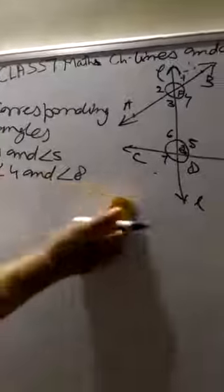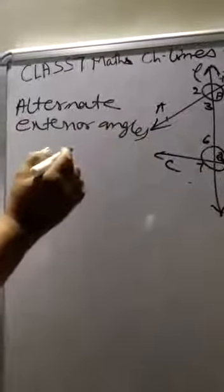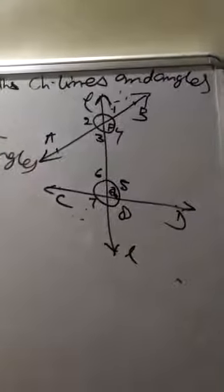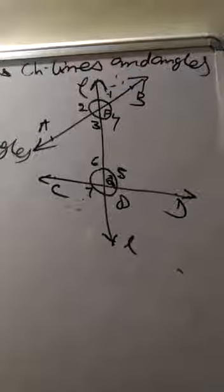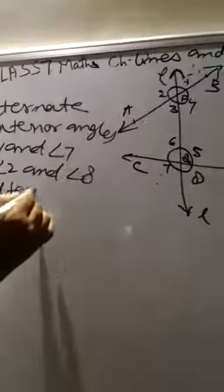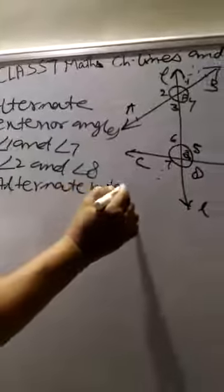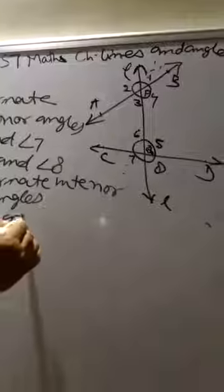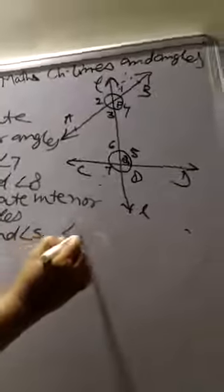Now alternate interior angles. Alternate exterior angles: 1 and 8, 2 and 8. Alternate interior angles: 3 and 5, 4 and 6.